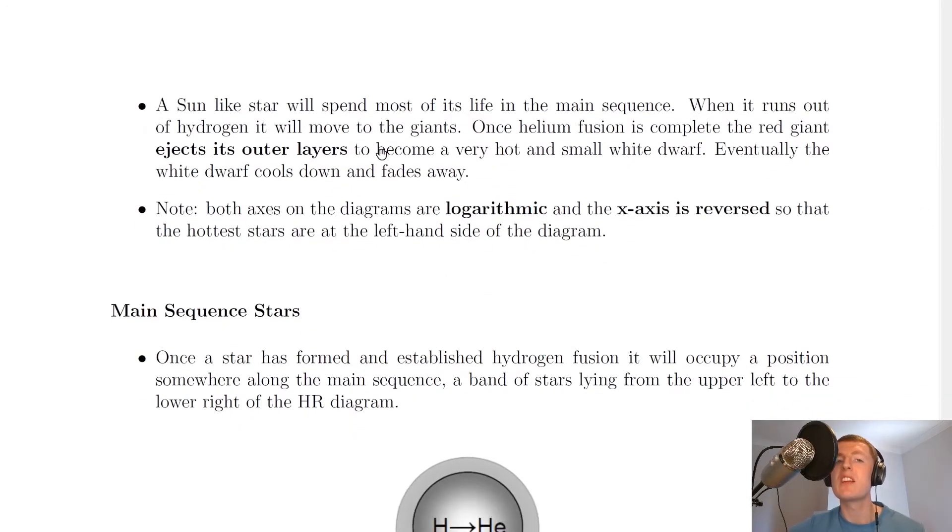A sun-like star will spend most of its life in the main sequence. When it runs out of hydrogen, it will move to the giants. Once helium fusion is complete, the red giant ejects its outer layers to become a very hot and small white dwarf. Eventually, the white dwarf cools down and fades away.